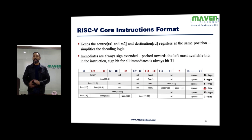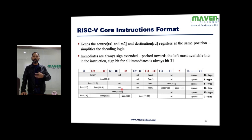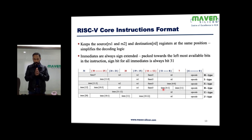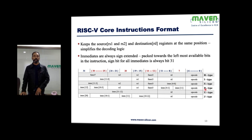Next is B-type, branch type. It checks a condition using RS1 and RS2 as operands — for example, RS1 equals RS2 or RS1 is less than RS2. There can be different conditions. If the condition is true, it jumps to the address defined by the 12-bit immediate value. We sign extend the immediate and calculate the address. If the condition is true, PC becomes PC plus the immediate value; otherwise, PC becomes PC plus 4. That's how branch type works.